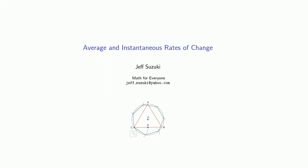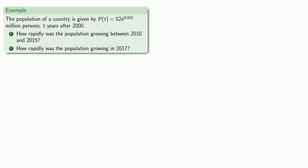Let's take a look at an example of finding the average and instantaneous rates of change. The population of a country is given by P(t) = 52e^(0.02t) million persons, t years after 2000.